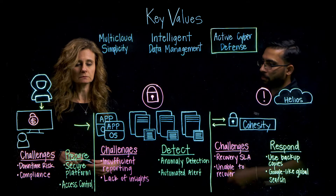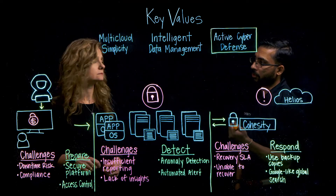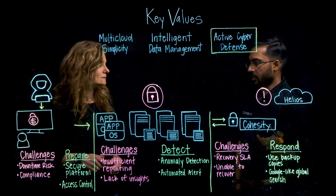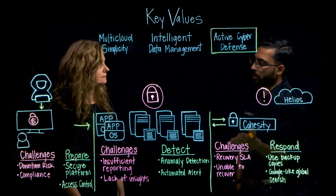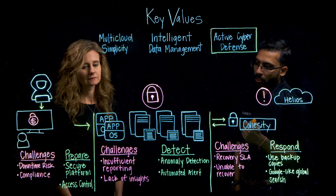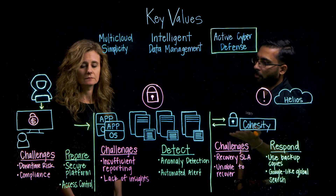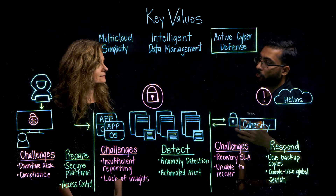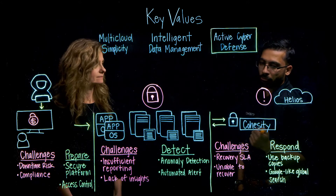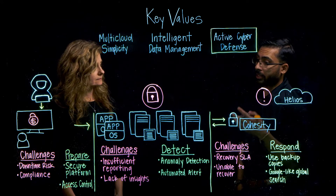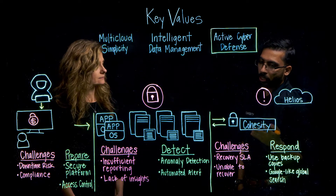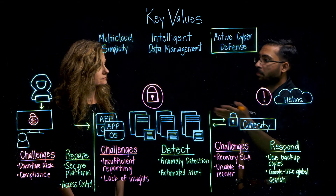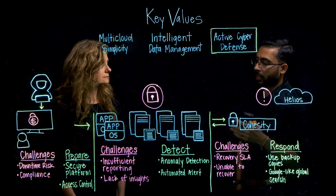Whenever these attacks happen or there is risk of downtime, oftentimes people try to encrypt data which is already stored on your data storage platform. To prepare our customers against that, we provide this in two forms. The first is secure data placement. On Cohesity Smart Files, customers can use WORM — write once, read many protection. For SMB and NFS, we have data lock and file lock, where once the data has been written, it cannot be tampered with or deleted, which helps prevent these kinds of attacks where data cannot be encrypted.